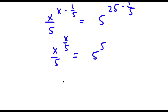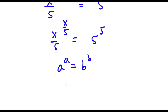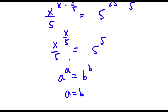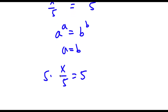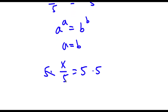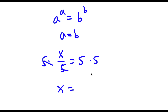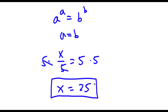Using the rule that if a to the power of a equals b to the power of b then a equals b, I have (x over 5) to the power of (x over 5) equals 5 to the power of 5. This means x over 5 equals 5. Multiplying both sides by 5 gives x equals 25. So 25 is our answer.